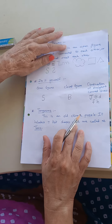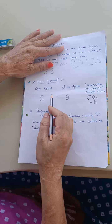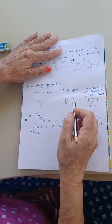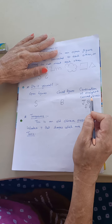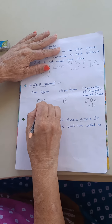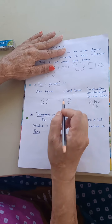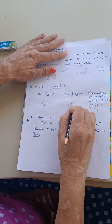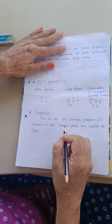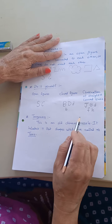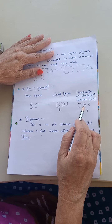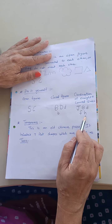You have also done an exercise where you segregated the letters of the alphabet into three columns — open figures, closed figures, and combination of straight and curved lines. S and C can be said as open figures. Closed figures can be B, D, small d, small b. Combination of straight lines and curved lines includes J, which has a curved line and a straight line, capital B, D, F, and H.